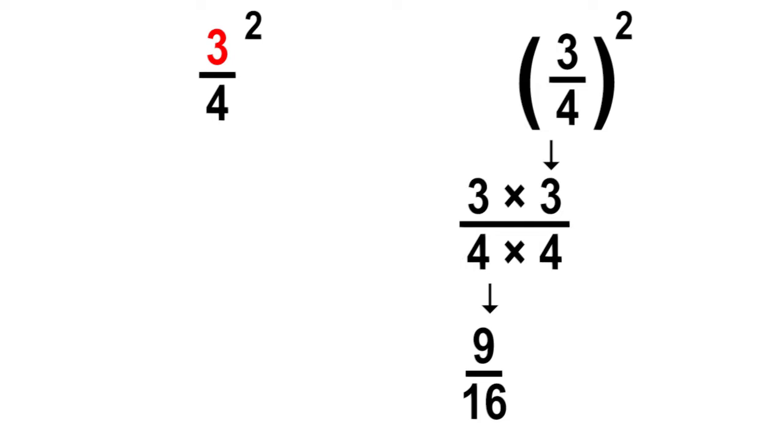Without the parentheses around the fraction, the three would be multiplying two times on top of the fraction for nine, and the denominator would stay the same, which is four. The answer would be nine-fourths. Nine-fourths does not equal nine-sixteenths. That is why it is a good reason to place parentheses around the fractions when multiplying exponents.